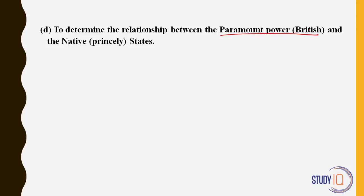Consider the following pairs: Radha Kanta Dev — first president of British Indian Association; Gazulu Lakshminarasu Chetty — founder of Madras Mahajan Sabha; Surendranath Banerjee — founder of Indian Association. These were all precursor organizations to the Indian National Congress — political organizations before Congress was founded. The first and third pairs are correct; the second is wrong. So the answer is 1 and 3 only.